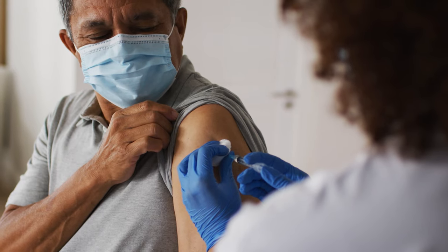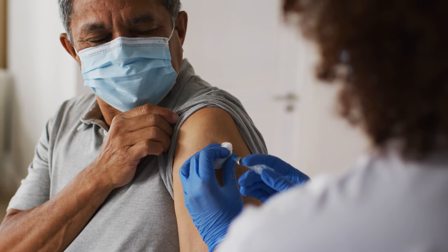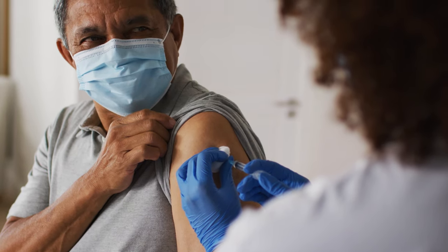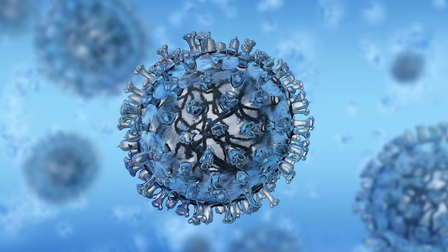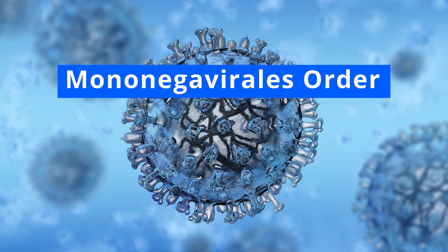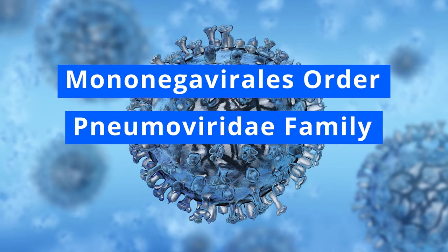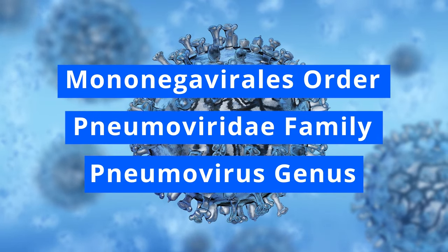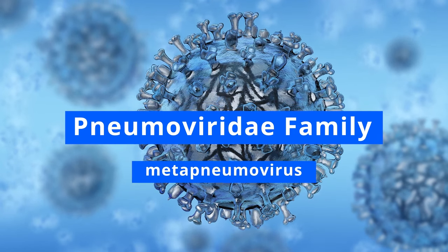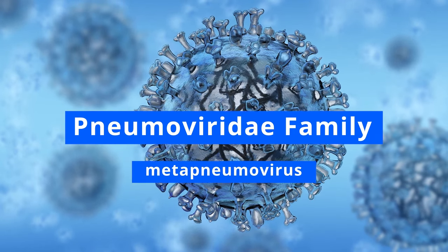We have created vaccines for RSV in the past, but some of these vaccines led to enhanced disease — yes, that's a real thing, just not with the COVID vaccines. RSV is an enveloped, negative-sense, single-stranded RNA virus. It belongs to the Mononegavirales order, Pneumoviridae family, and Pneumovirus genus. The Pneumoviridae family also houses metapneumovirus, which is also a major pathogen in kids.